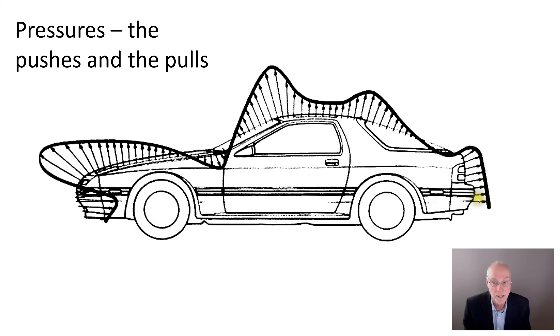At the back of the car, the airflow is no longer following the surface, is no longer attached. And so a different mechanism occurs there, creating that low pressure. But at this stage, think of this diagram as showing the pressures, the pushes and the pulls that are happening on the car's bodywork.